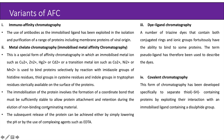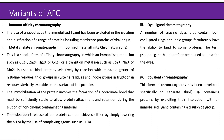Depending upon the types of ligand used, there are many variants of affinity chromatography. These include immunoaffinity chromatography, where the use of antibodies as the immobilized ligand has been exploited in the isolation and purification of a range of proteins, including membrane proteins of viral origin. Another type is metal chelate chromatography, also called immobilized metal affinity chromatography.